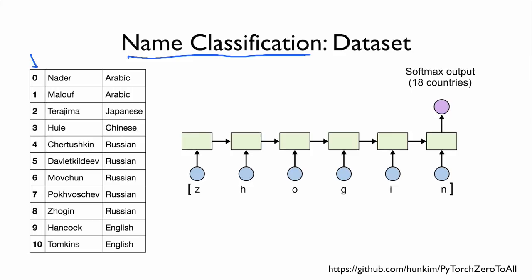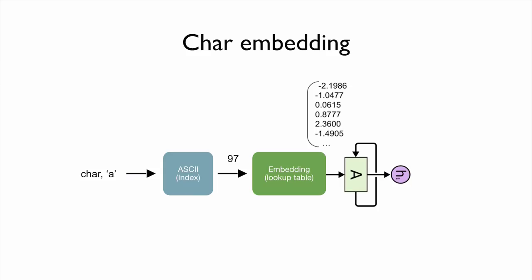Our data looks something like this: we have names and corresponding countries. For example, Bolov is coming from Arabic, a given name is Japanese, and Hu is Chinese. So for a given name, we want to predict the country. In our dataset, we have 18 different countries, so we're going to make a softmax output for 18 countries. For the input, we feed the entire name divided into each character, feeding one character at a time to each cell.